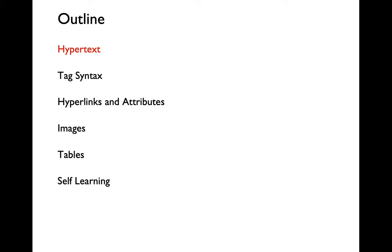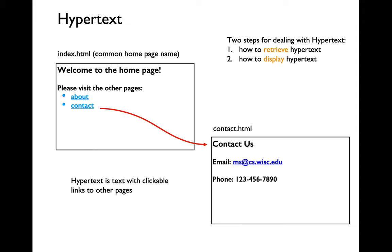Let's do a quick recap of what hypertext is. Hypertext would be a word or a set of words which has a clickable link. For example, on the left pane here, let's take into consideration that this is an index.html file, which would be the landing page for the majority of web pages. Suppose I have a couple of clickable links on the index.html page, and let's say you click on 'contact' — that will usually take you to another web page, contact.html.